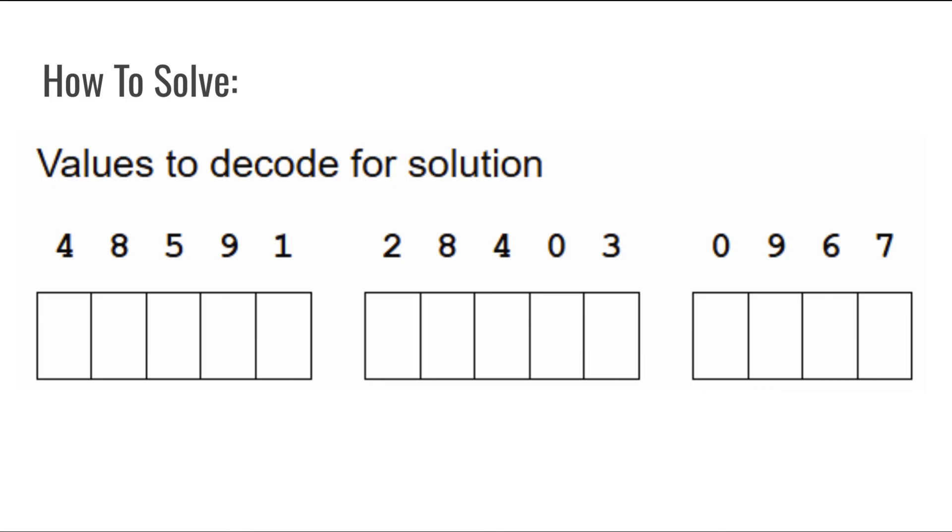For example, in this addition cryptarithm we have right here, we would have P is equal to 9, A is equal to 1, and U is equal to 0. Whenever we have a number matched to a letter, we would put the letter that is mapped to the number and solve the cryptarithms that way.